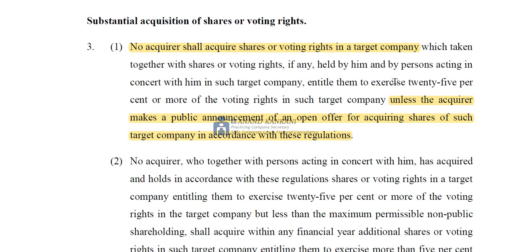Let's try to understand these lines. Regulation 3 is a restricting regulation — the starting word is 'no acquirer shall acquire shares or voting rights in the target company.' So regulation 3 restricts the acquirer from acquiring shares or voting rights in the target company unless the acquirer gives a public announcement for the open offer for acquiring shares of the target company in accordance with these regulations.